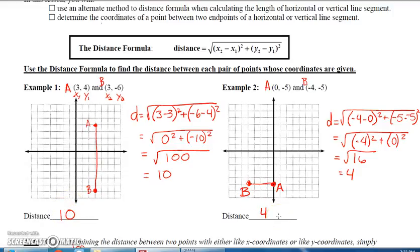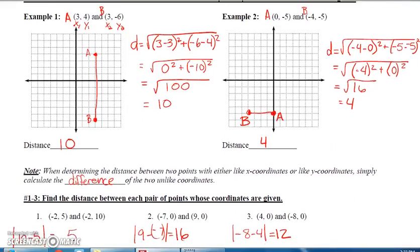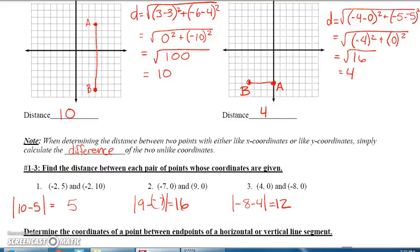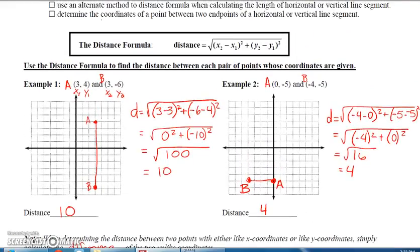If you want to use the distance formula, go ahead. But when we're on maybe like a unit test, we're trying to save time and make things as easy for us as possible. If I plot my two points and I see it's vertical or horizontal, I'm probably just going to count. Now, sometimes we don't have a coordinate plane, right?